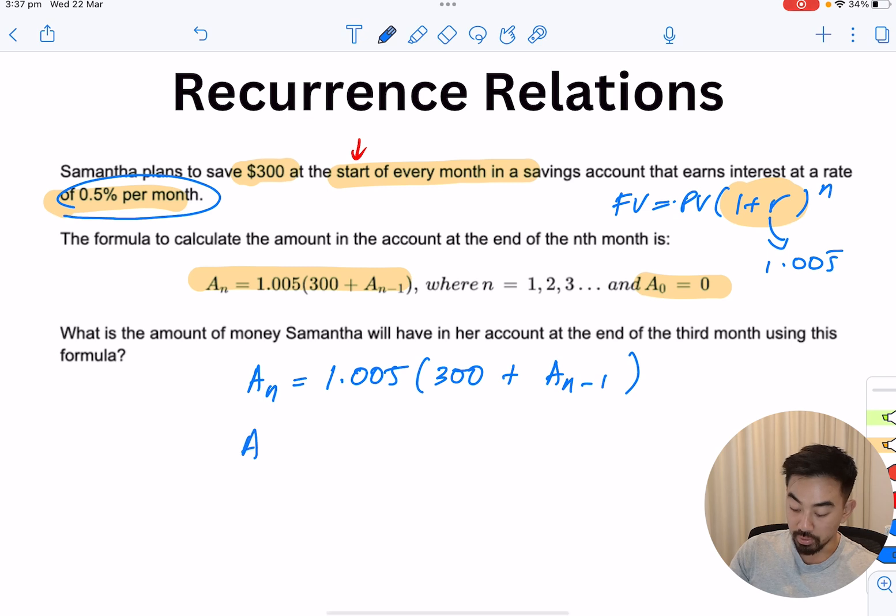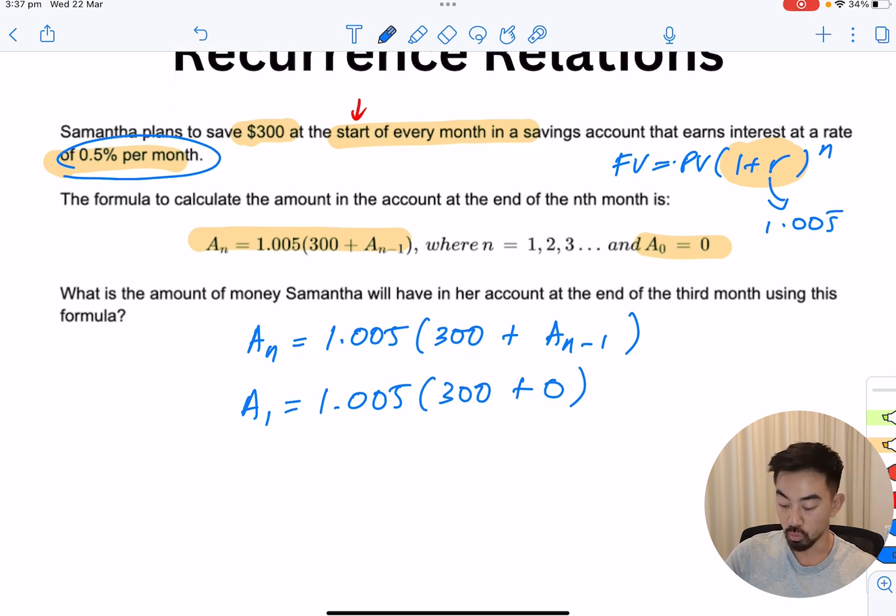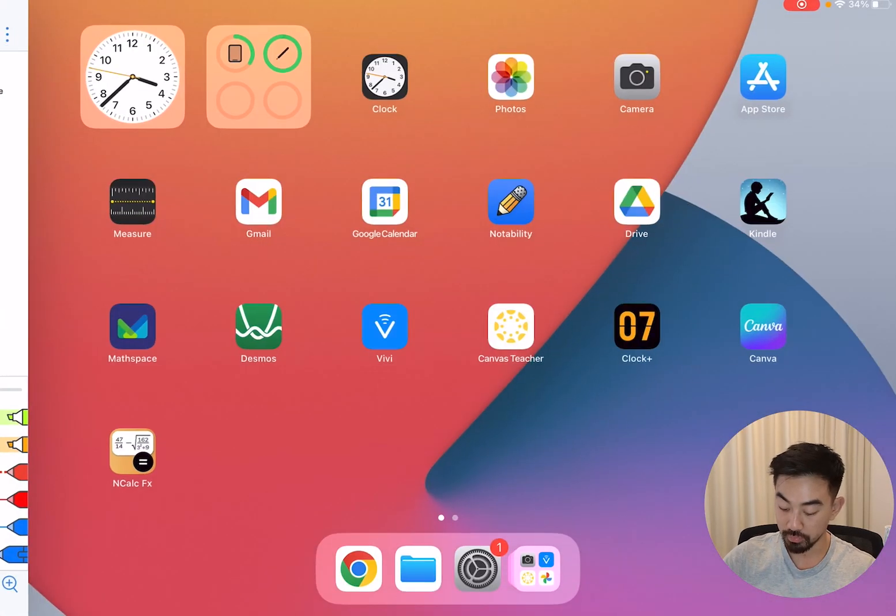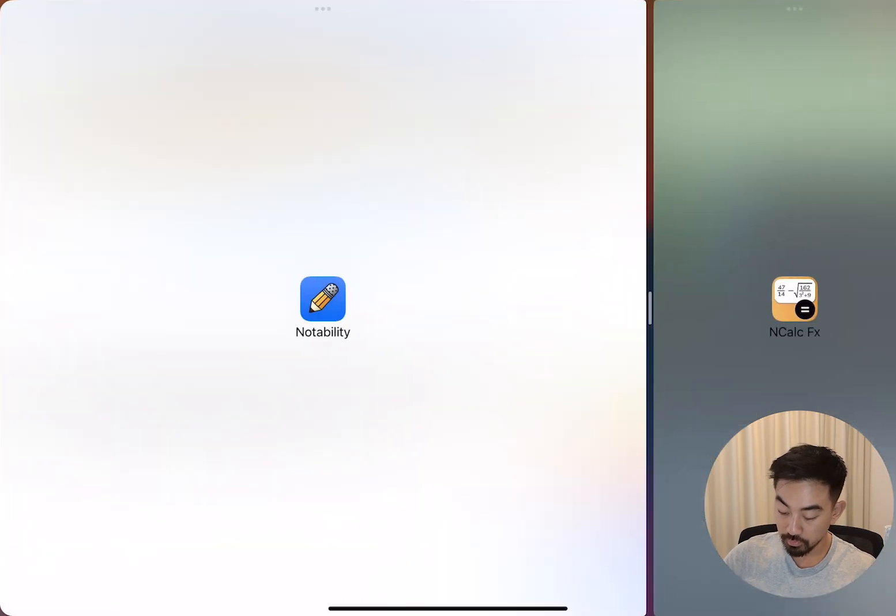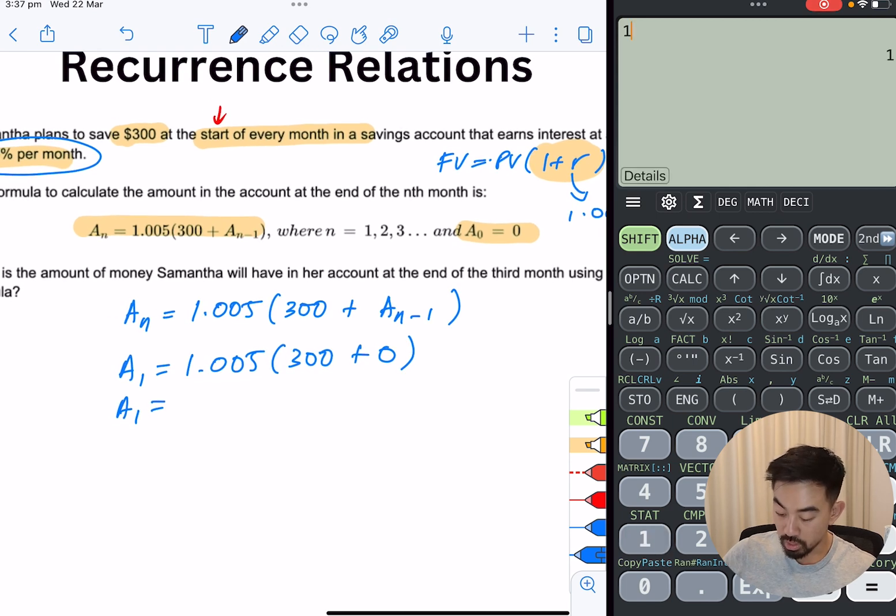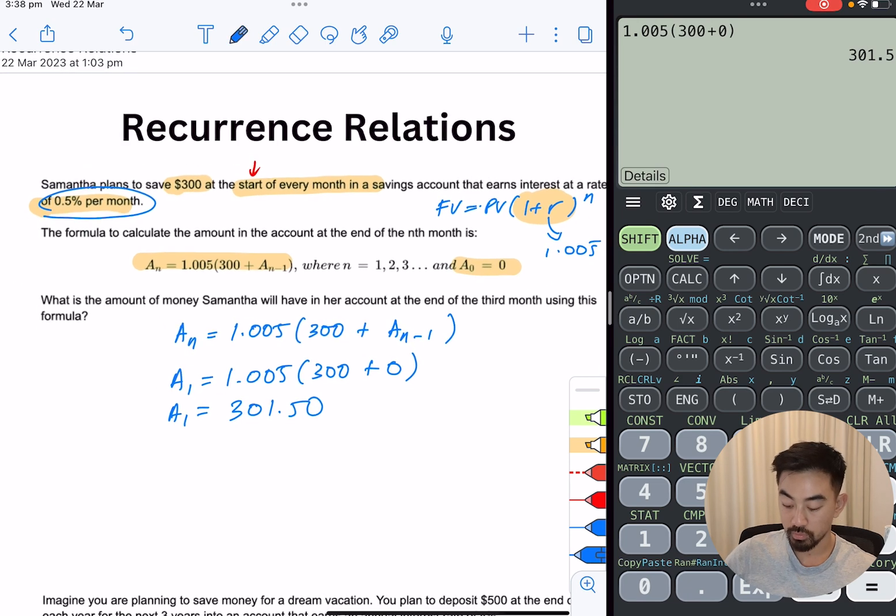Let's say we want to work out the first month. What we need to do is we need to substitute the previous month in this value. Well, what's A0? A0 is here, happens to be 0. So the first one should look like this: 1.005 times (300 plus 0). So what does A1 equal to? Let's get the calculator. So 1.005 times 300 plus 0. So that is $301.50 for the first month.